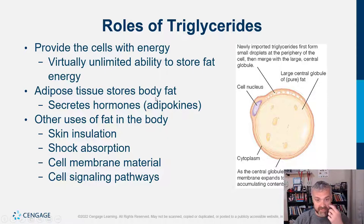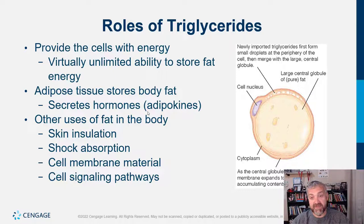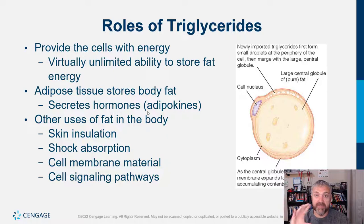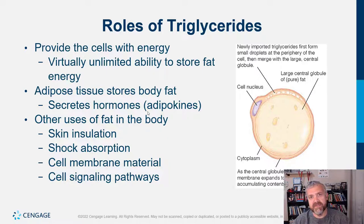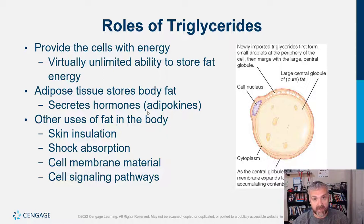Adipose tissue stores body fat and secretes hormones. Fat is basically an endocrine organ — the more fat you have, especially visceral fat around the abdomen, the more inflammatory it is. Fat cells release hormones that tell your brain about how much energy you have stored. Fat also releases an enzyme called aromatase that converts testosterone into estrogen. Other uses of fat: insulation, shock absorption (fat pads around kidneys and eyeballs), cell membrane material in the phospholipid bilayer, and cell signaling including fat-soluble hormones and steroid hormones like testosterone and cortisol.